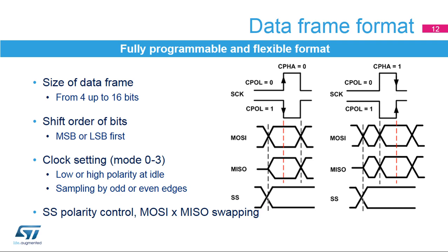Several parameters are used to set up the data format. Users can define the data frame size and the transmit order of the shift register. The clock can be set to one of four basic configurations defined in the Motorola SPI specifications. The combination of two bits controls the polarity and phase of the clock signal. When the phase control bit is cleared, data bits are sampled on the odd clock edges and the even clock edges synchronize the shifting of the next bit onto the data line. This is the opposite when the phase control bit is set. The clock polarity bit defines the idle state of the clock signal and which clock edge is used for data sampling or shifting.